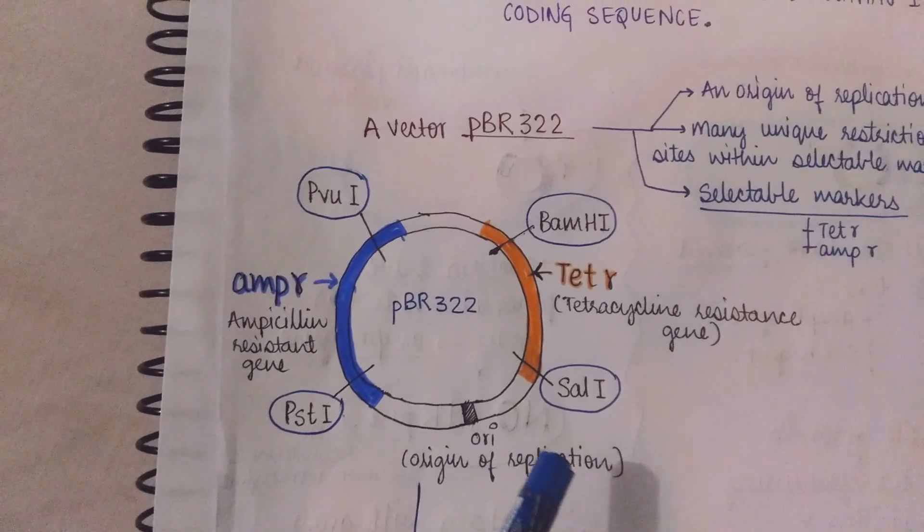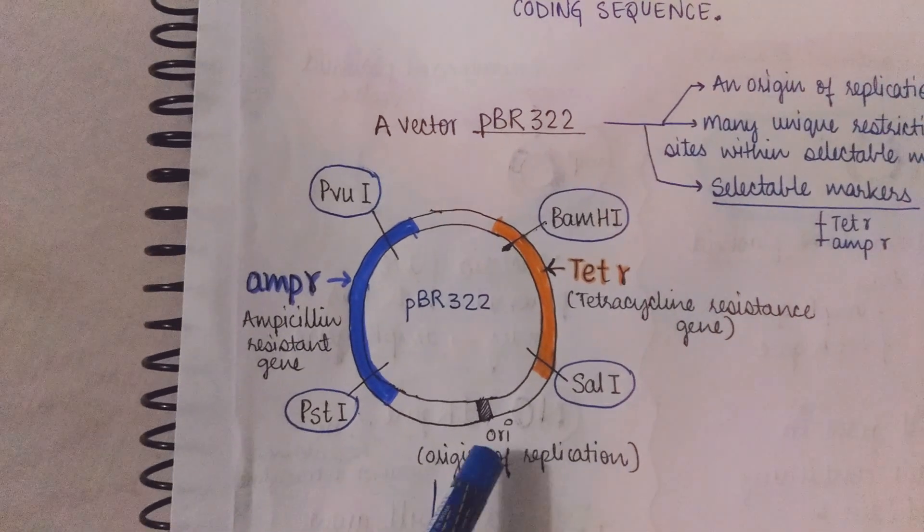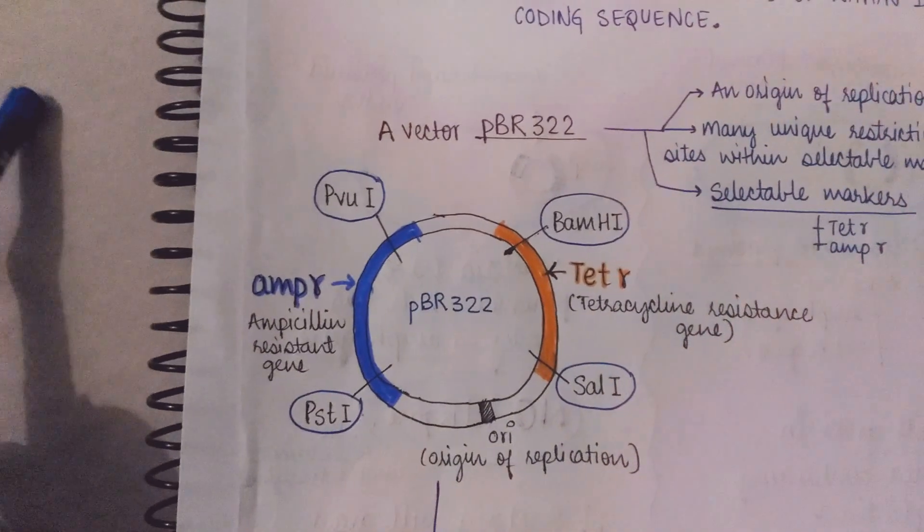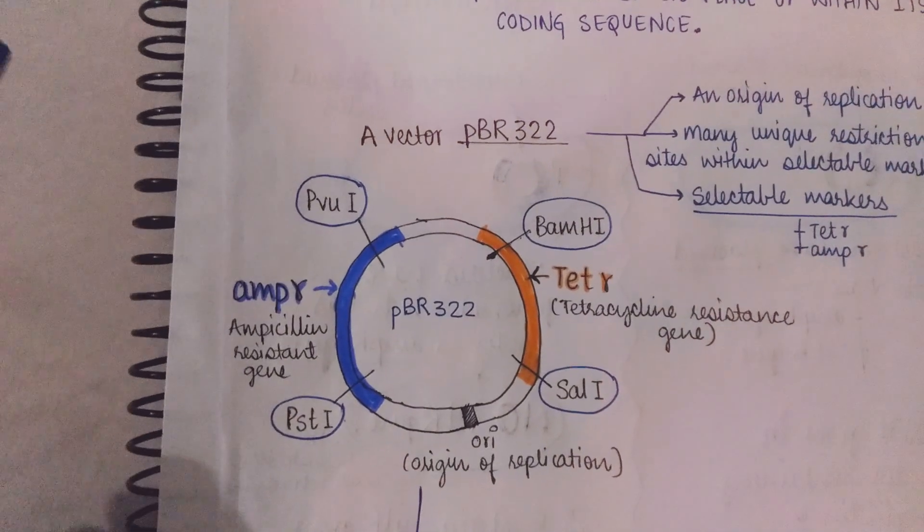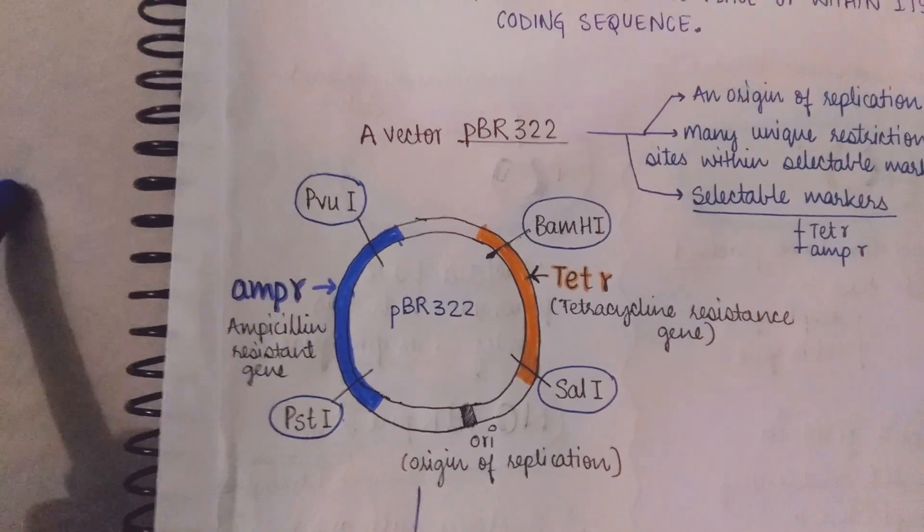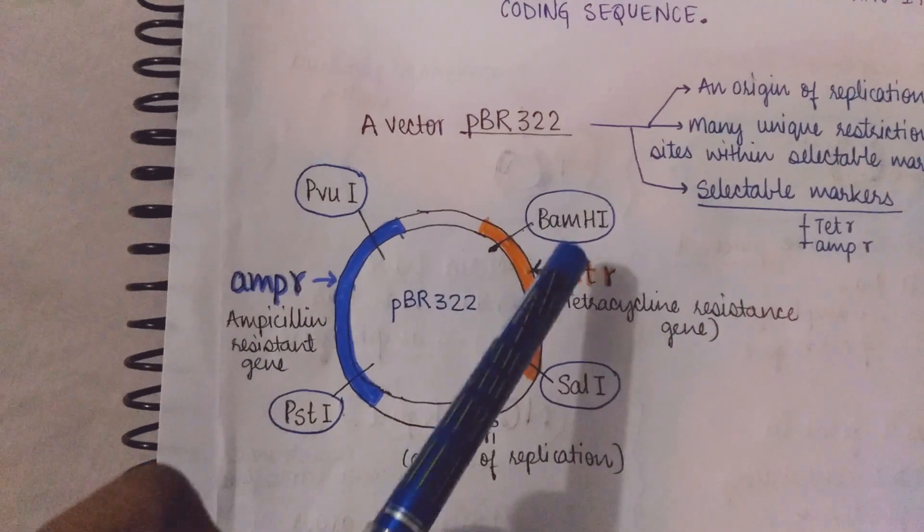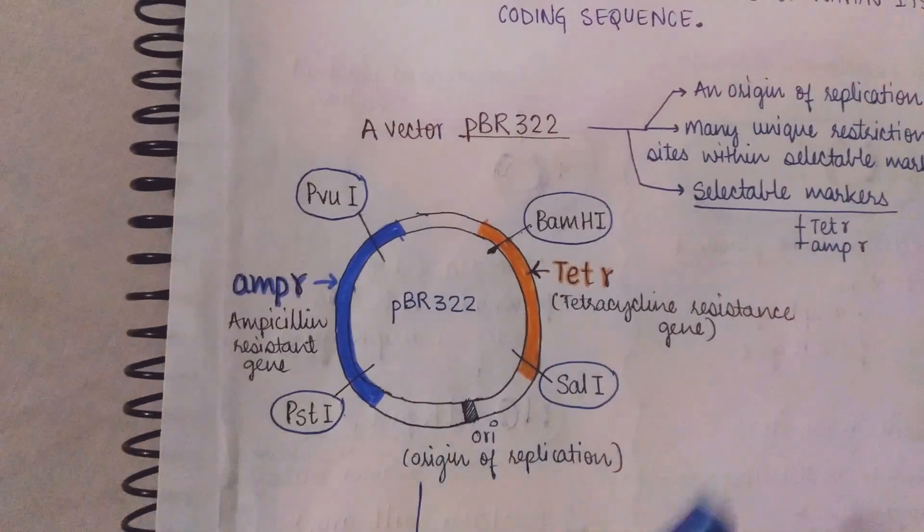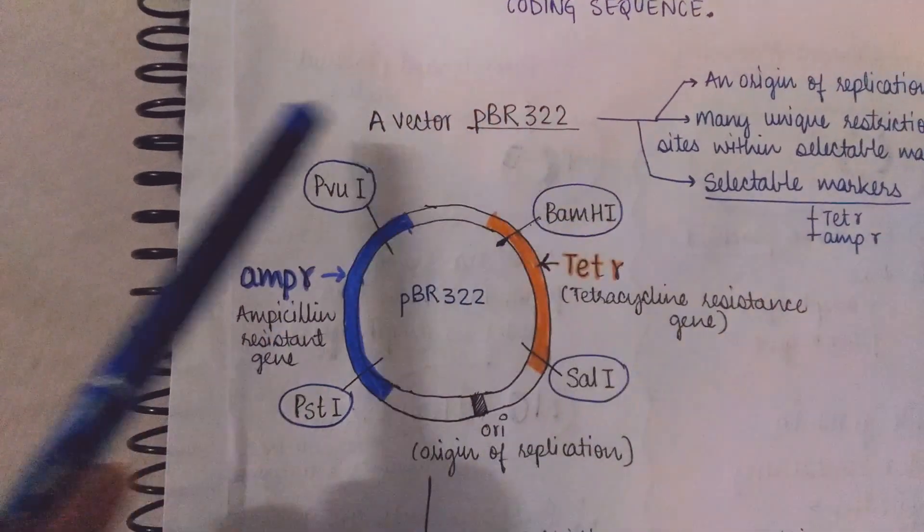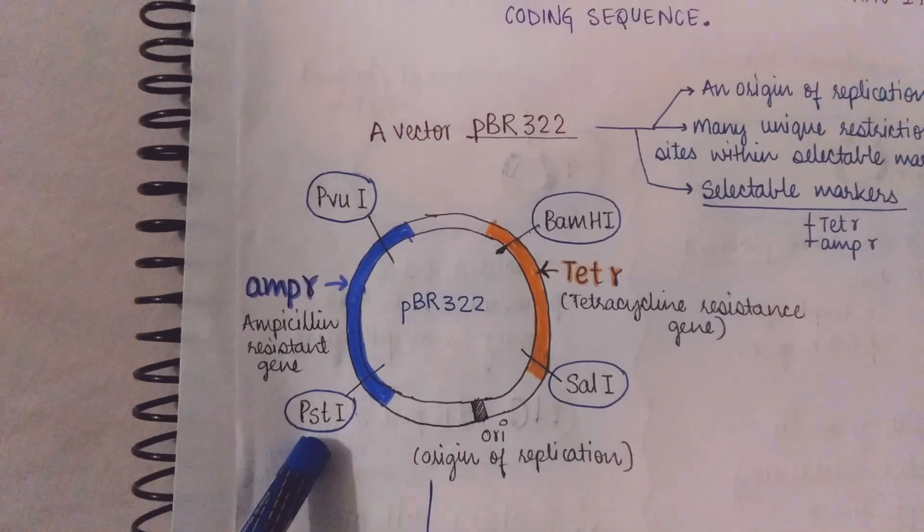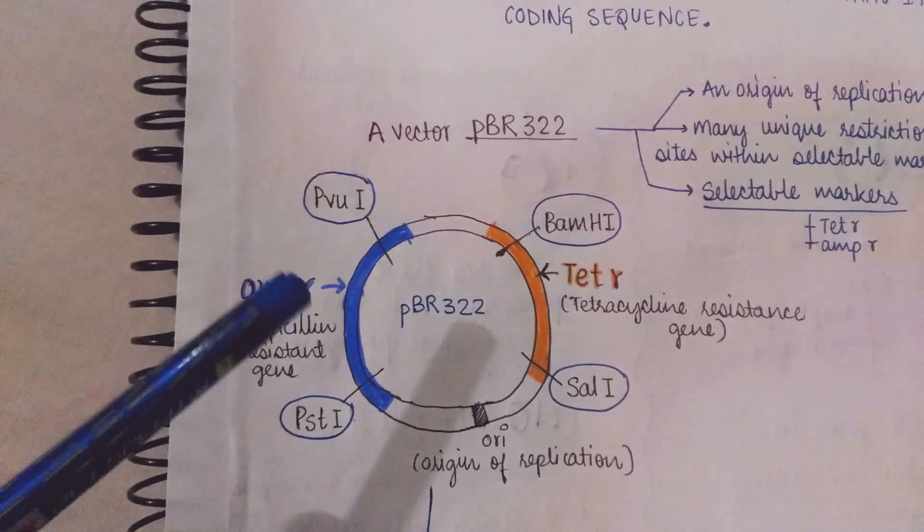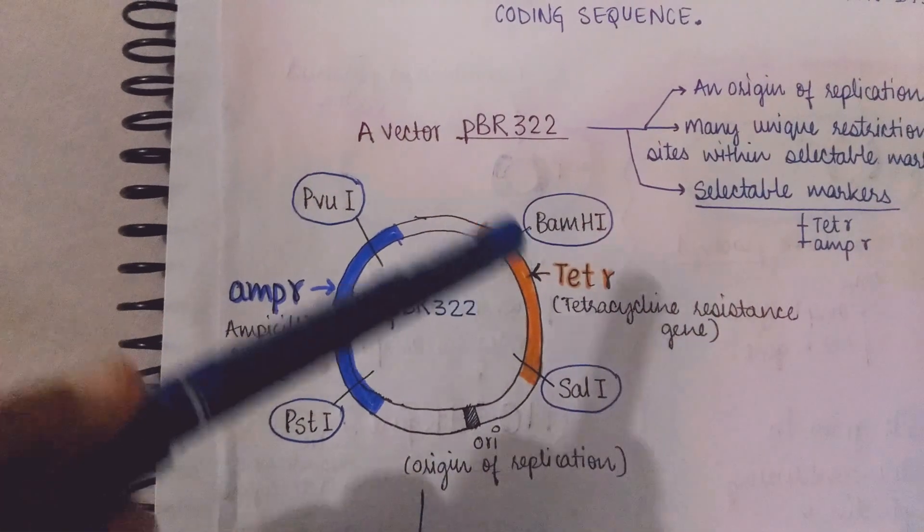Origin of replication is very necessary because it is required for the replication of the plasmid. Second is restriction sites. We can say specific restriction sites because these are specific for the restriction endonucleases. The BAMH1, PVU1, PST1 and SAL1 are the unique restriction sites. They are present within the selectable markers.